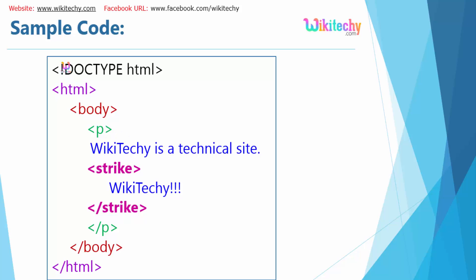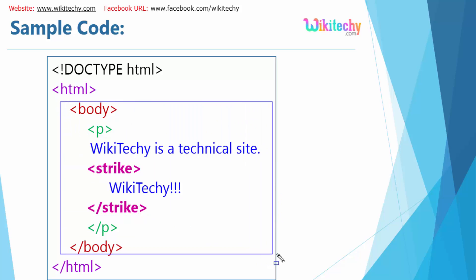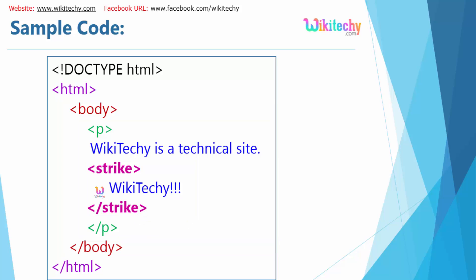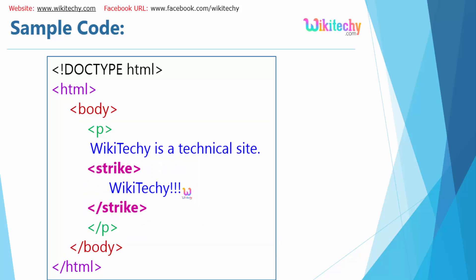Here is the sample code. You have your HTML and this is the body. In that we have our paragraph tag. Under that I have 'wikideki is a technical site' and here is the strike tag. The strike tag indicates that there will be a strike happening here.